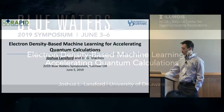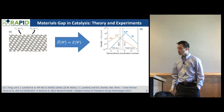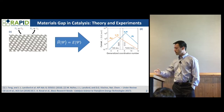Today I'll be discussing electron density based machine learning for accelerating quantum calculations, specifically in relation to heterogeneous catalysis. So what's the motivation? Why do we care about this? We have this thing in catalysis called the materials gap, and let me give a brief run through of what we do and how we predict materials properties.